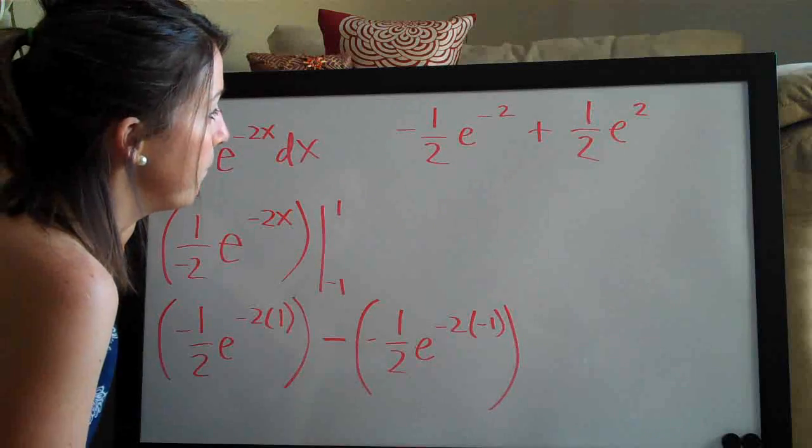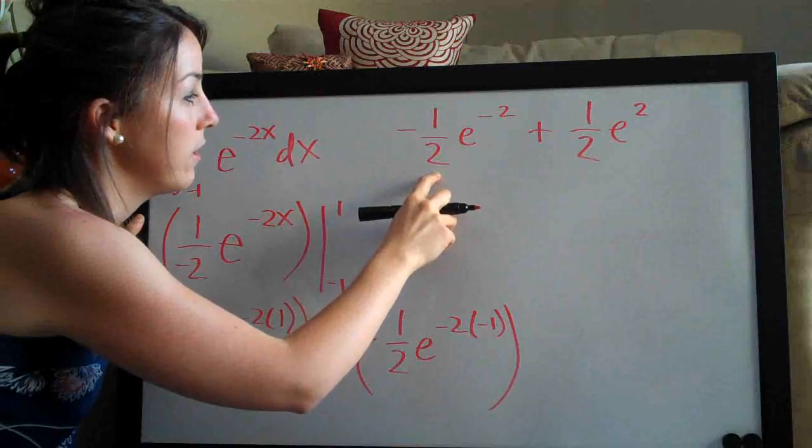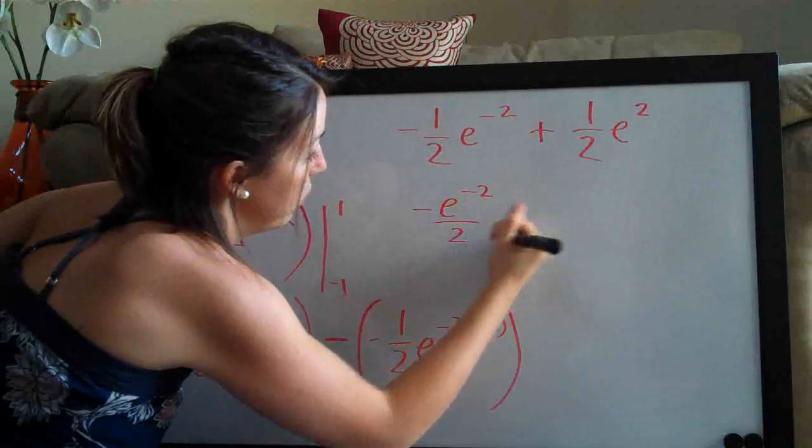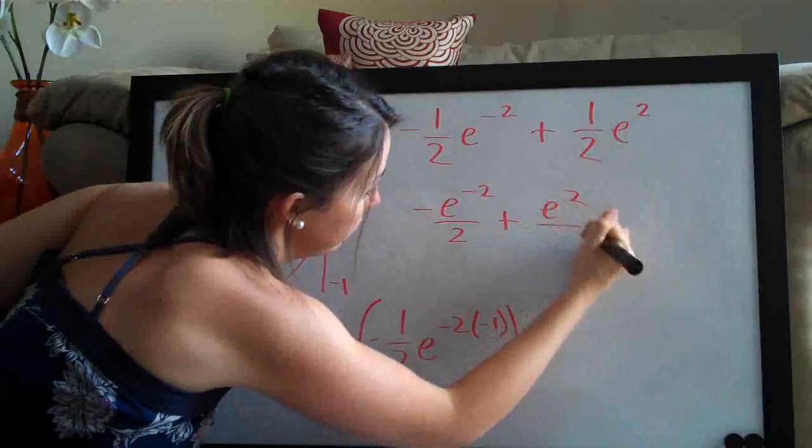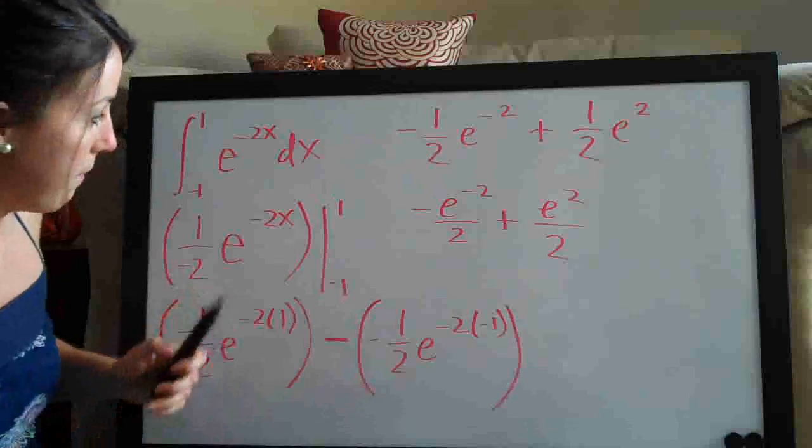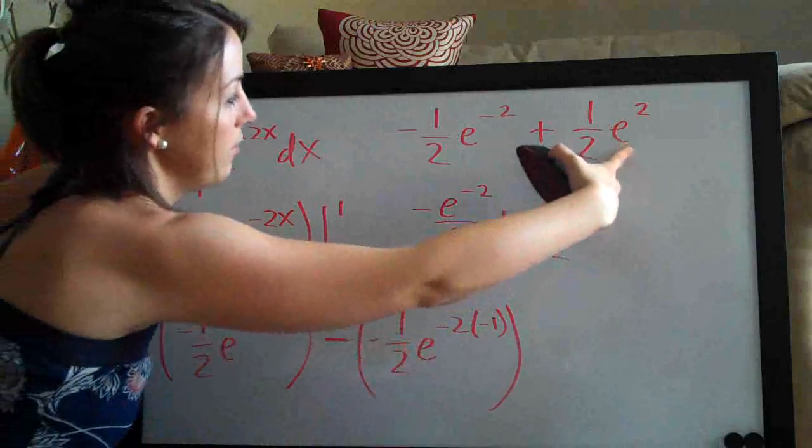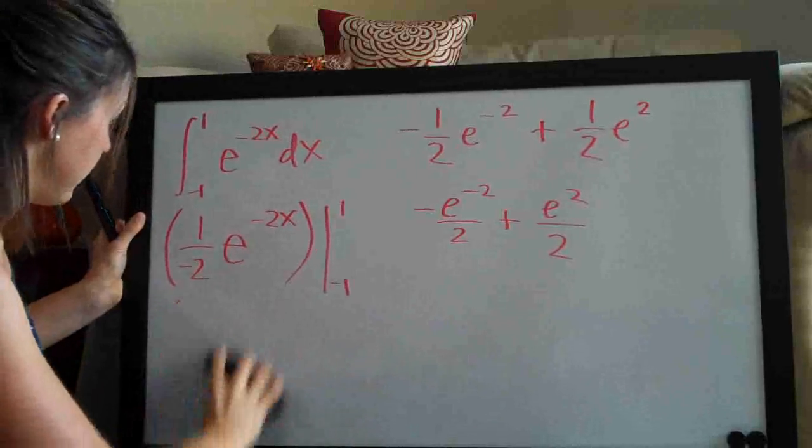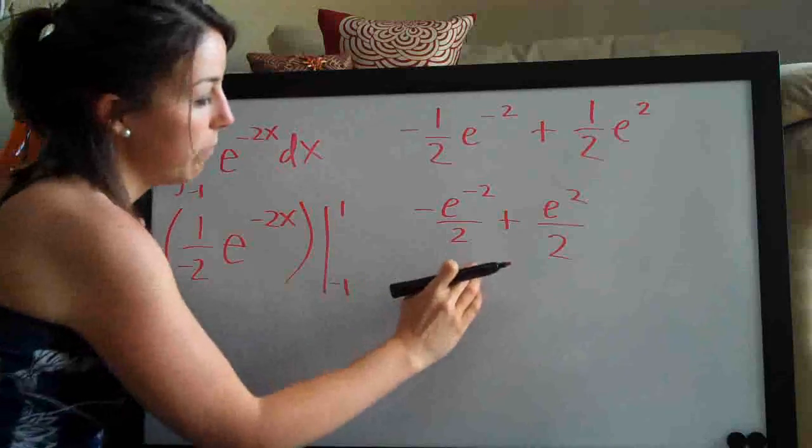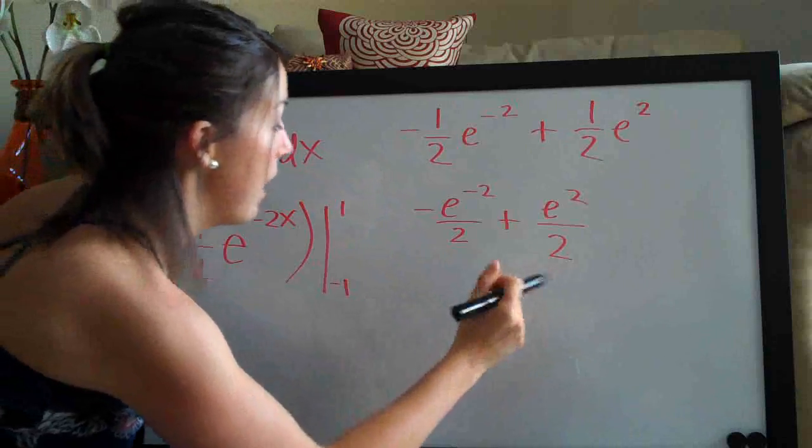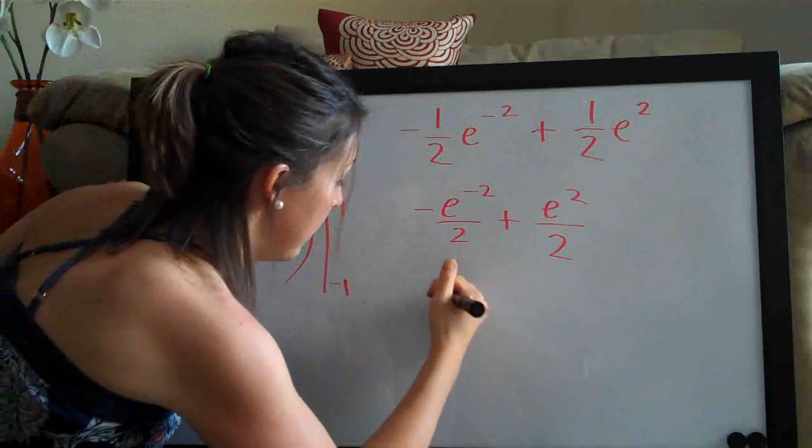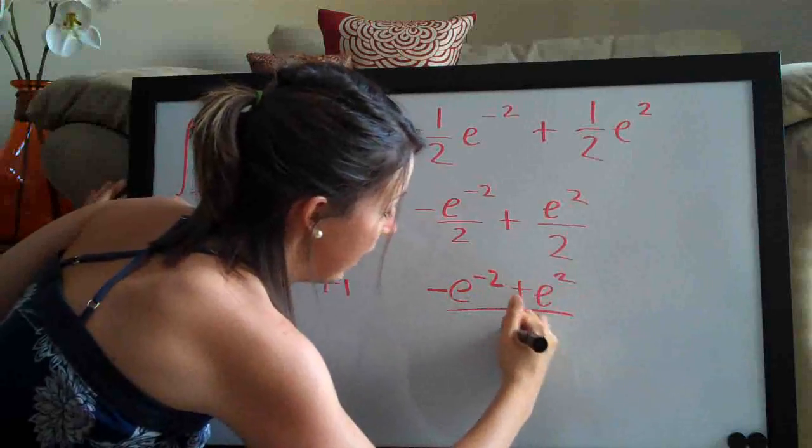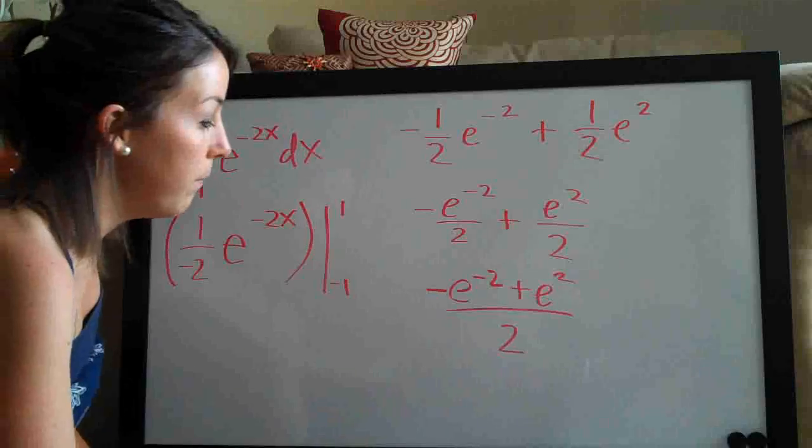And then since both of the denominators here are 2, we could actually change this to say negative e to the negative 2 over 2 plus e to the 2 over 2. I just moved the e squared and the e to the negative 2 up in place of the ones to kind of simplify the fractions so that we could see this a little bit easier. So since both of these fractions are over 2, we can change this to be negative e to the negative 2 plus e to the 2 and then the entire thing over 2.